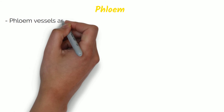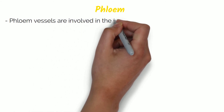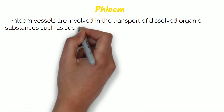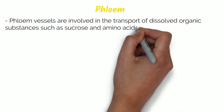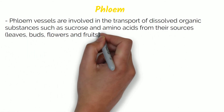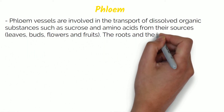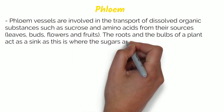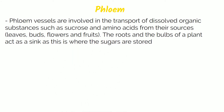Phloem vessels are involved in the transport of dissolved organic substances such as sucrose and amino acids from where they are made, known as sources. For example, leaves, buds, flowers and fruits can be considered sources. The roots and the bulbs of the plant act as a sink, as this is where the sugars are stored.